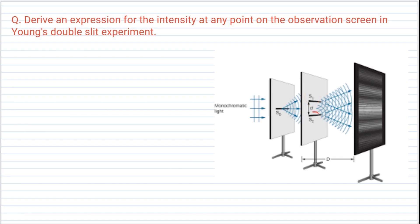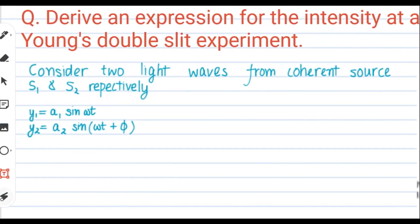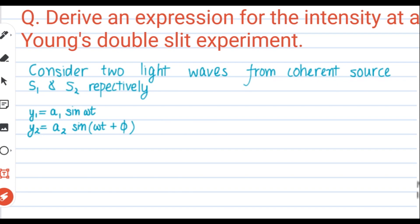Consider the light waves coming from coherent sources S1 and S2. The light waves are in the form of sinusoidal waves where y1 and y2 show displacement along the y-axis, a1 and a2 are the amplitudes, omega represents angular frequency, t represents time, and phi represents the phase difference in the second wave.